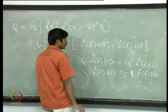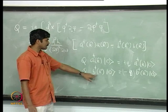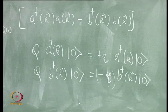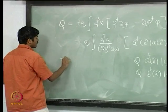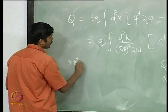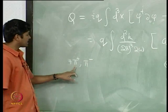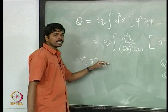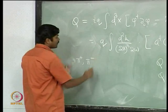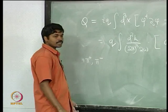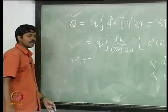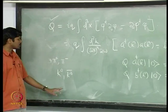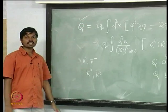Therefore particles of type A are positively charged particles, while particles of type B are negatively charged particles — this is what was absent in the real Klein-Gordon case. A complex Klein-Gordon field can describe particles where there are two types of charges. For example, a system of π+ and π- (positively and negatively charged pions) can be described by a complex Klein-Gordon field. Alternatively, the charge need not be electric charge — one could use q to denote hypercharge and describe a system of K^0 and K̄^0 with hypercharges +1 and -1.